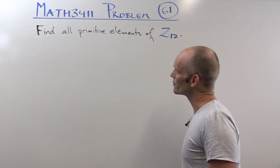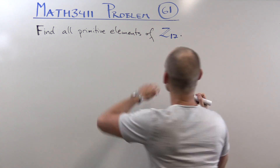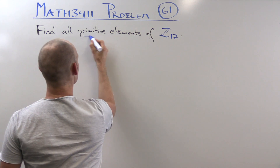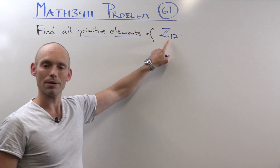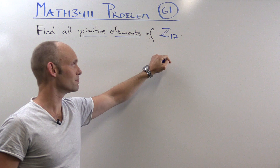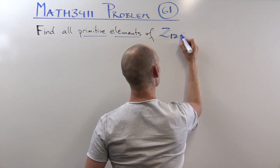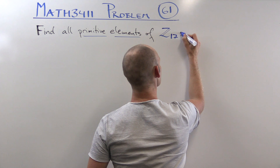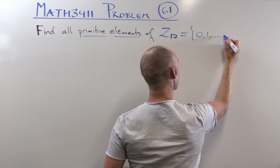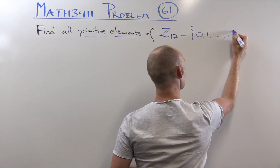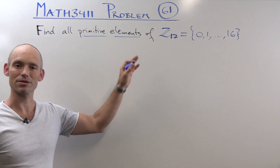In this problem, we have to find all the primitive elements of Z₁₇. This is all the integers modulus 17, which we can write as the set of numbers from 0 up to 16. That would be one representation.